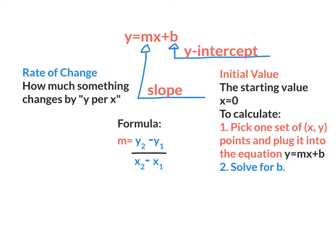In y equals mx plus b, your m is the slope. In terms of functions, it's called the rate of change. It's how much something changes by y per x, like miles per hour or dollars per pound. When we talk about b, that's the y-intercept. In functions, it's called the initial value. It's the starting value where x equals zero.